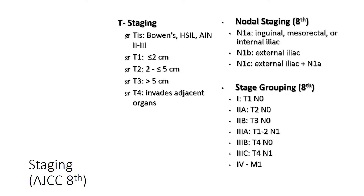The staging for anal cancer — T staging is based on the size of the primary tumor. For nodal staging, in the latest guidelines all nodal disease has been changed to subgroups of N1 disease, because calling them N2 and N3 was misleading as those didn't seem to impact survival much. Effectively, you have to be T4 or node-positive to have stage III disease.